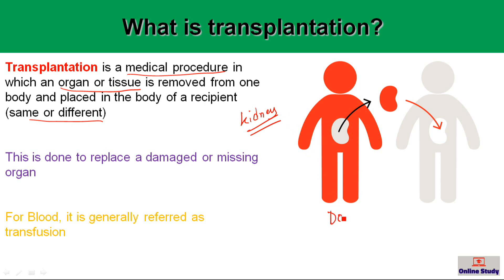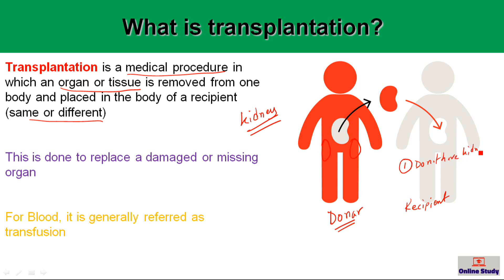Consider a donor who has two kidneys — this donor can give the recipient one kidney easily. There are two situations in which a recipient needs a kidney: first, when the recipient was born without kidneys due to a congenital disease that destroyed them; and second, when the kidneys were damaged after birth, for example by an accident. This is why the recipient needs at least one kidney from a donor.